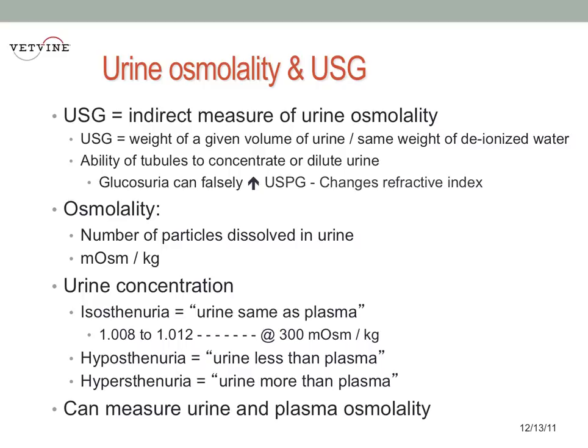The specific gravity is basically the weight of a volume of urine relative to the same weight of deionized water. The specific gravity of deionized water is 1.000.